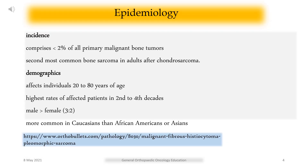Epidemiology and incidence: MFH comprises less than 2% of all primary malignant bone tumors and is the second most common bone sarcoma in adults after chondrosarcoma. Demographically, it affects individuals aged 20 to 80 years, with the highest rates in the second to fourth decades. It occurs more often in males than females and is more common in Caucasians than African Americans or Asians.